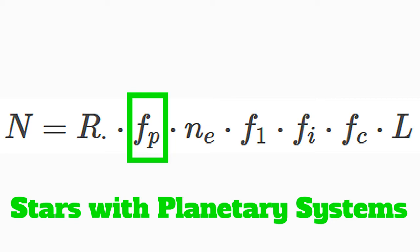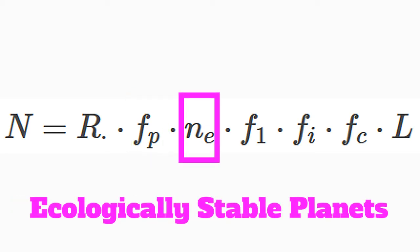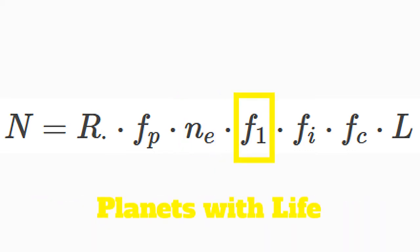F of P is the fraction of stars in our galaxy that actually have planetary systems. N of E is the fraction of these planets where it is ecologically stable for life to form. F of 1 is the fraction of these planets that life actually develops.